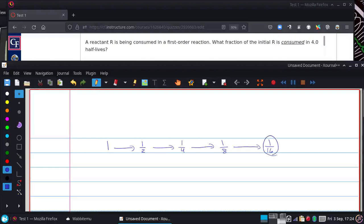So one-sixteenth is what it's at now. How much has been consumed? The rest of it: fifteen-sixteenths.